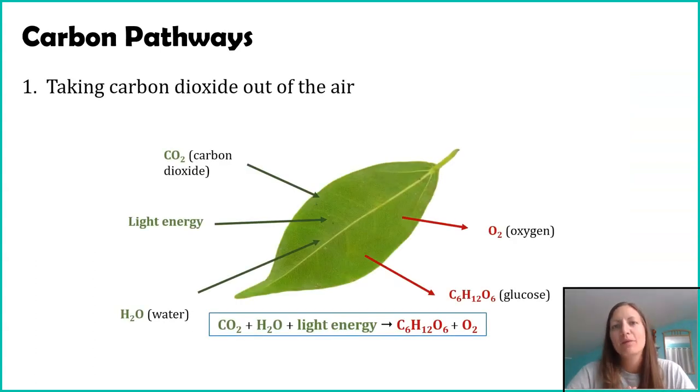So the first carbon pathway we'll talk about is carbon dioxide coming out of the air or coming out of the atmosphere. Now this slide should hopefully be a little bit familiar to you. The process you're looking at right now is photosynthesis. If you recall, here's a leaf representing a plant or a producer that's doing photosynthesis. These plants will absorb carbon dioxide. This carbon dioxide is in the air around them. They're going to take in that light energy from the sun and they're going to bring in water from their roots. And then the plant within itself is going to recombine those ingredients to create oxygen, which gets released back into the atmosphere and creates glucose.